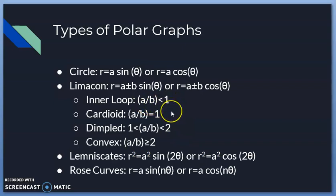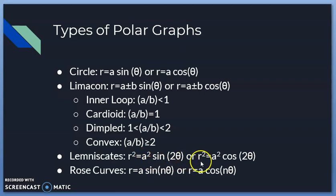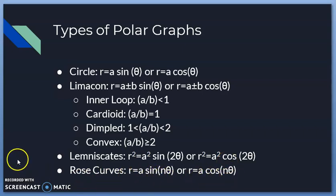The values of a and b determine the type of limaçon. If a/b < 1, you have an inner loop. If a/b = 1, you have a cardioid. If 1 < a/b < 2, you have a dimpled limaçon. If a/b ≥ 2, you have a convex limaçon. For lemniscates: r² = a²·sin(2θ) or cosine. For rose curves: r = a·sin(nθ) or r = a·cos(nθ).